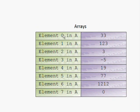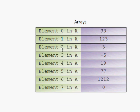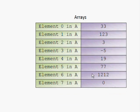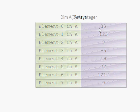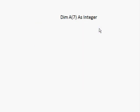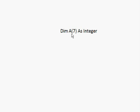In order to know which element you are accessing, we use this number, which is usually called the index number. To define an array, you write: Dim A — which is the name of the array; you can write anything, for example names, marks, etc. Then you write two brackets and put a number in between. This number represents how many elements you want the array to be able to store.